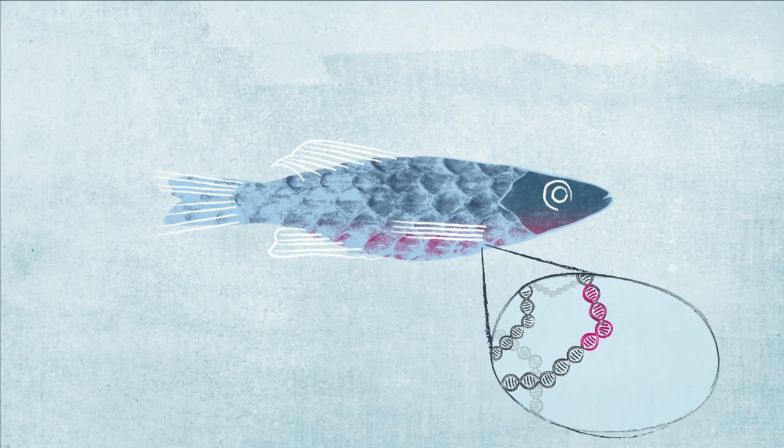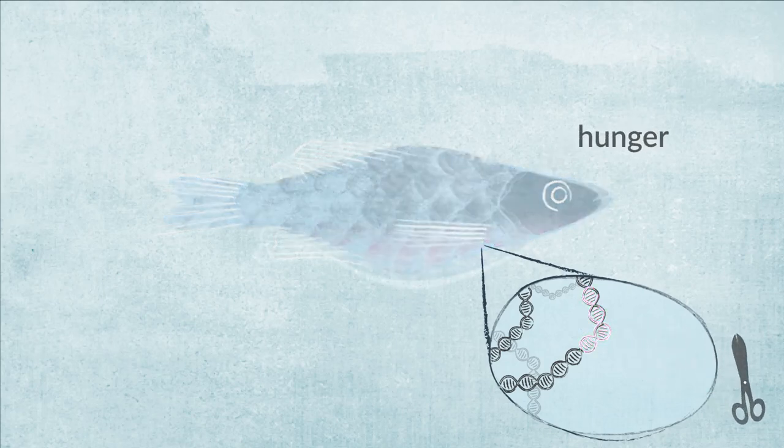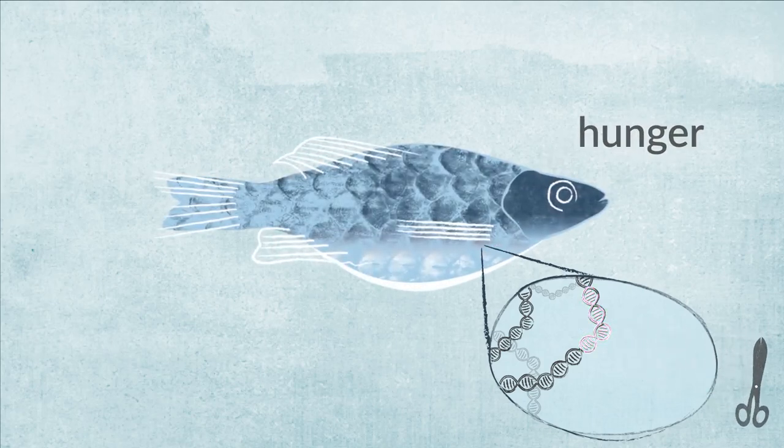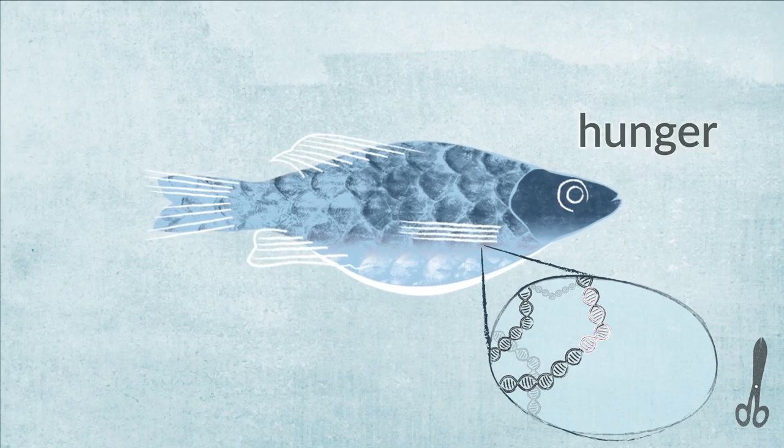For example, CRISPR-Cas9 gene scissors can be used to cut a gene that controls feeding behavior, making the genetically engineered fish much hungrier than their natural relatives.